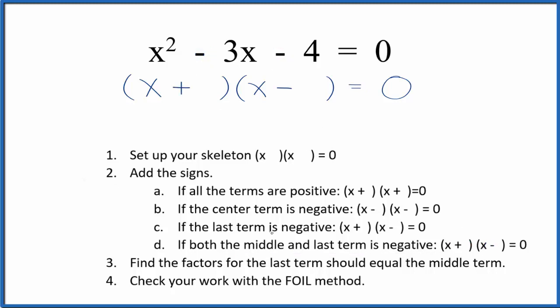Once we have the signs here, now we're going to find the factors for the last term. That's this negative 4 that should equal the middle term, the negative 3.